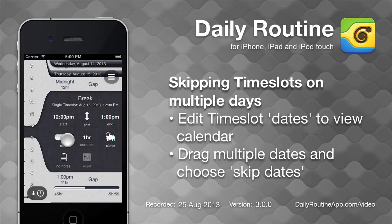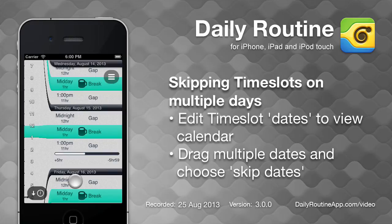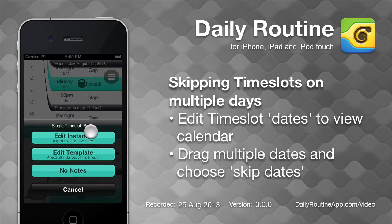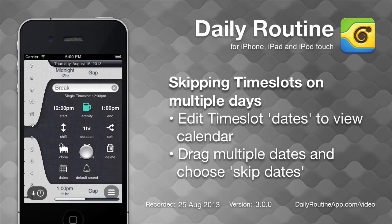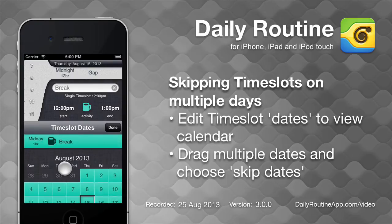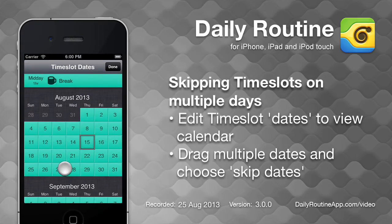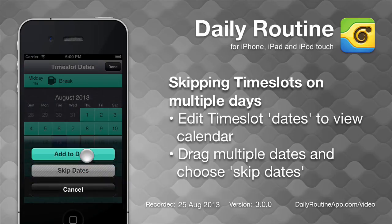The easiest way to skip multiple instances of a single time slot is to edit the single time slot's template, then tap Dates. Then in the time slot calendar, drag between two dates and choose the Skip Dates option.